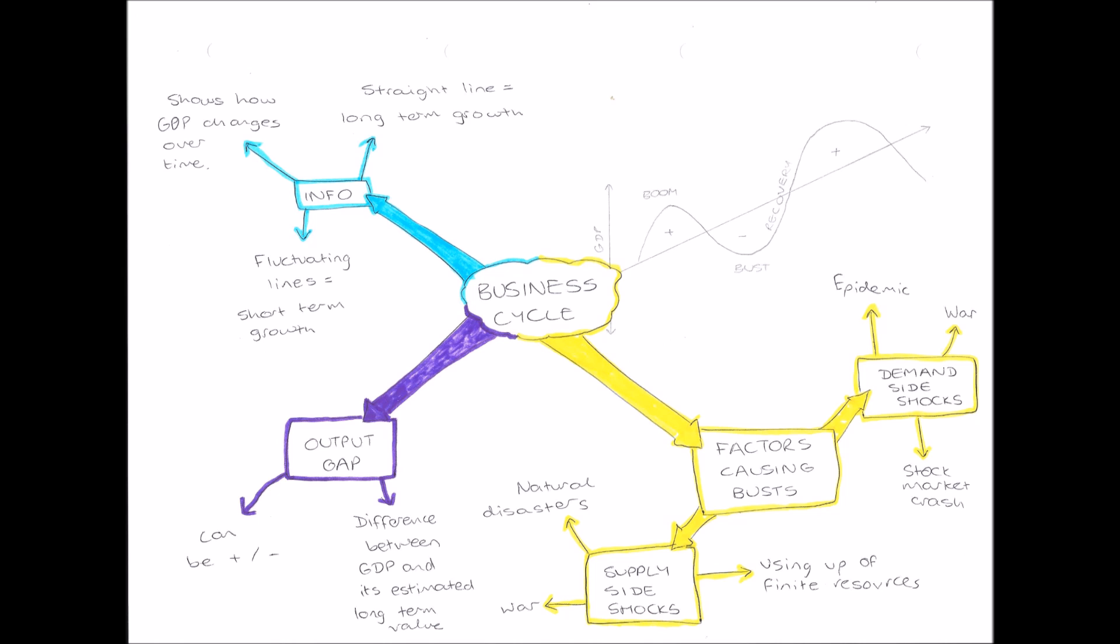And our fluctuating line, our line that goes up and down around this straight line, represents short term GDP and short term economic growth. And you notice when short term GDP is high we have economic booms, and when it's very low we have economic busts. And when it's coming from a low point to a high point, this is economic recovery.